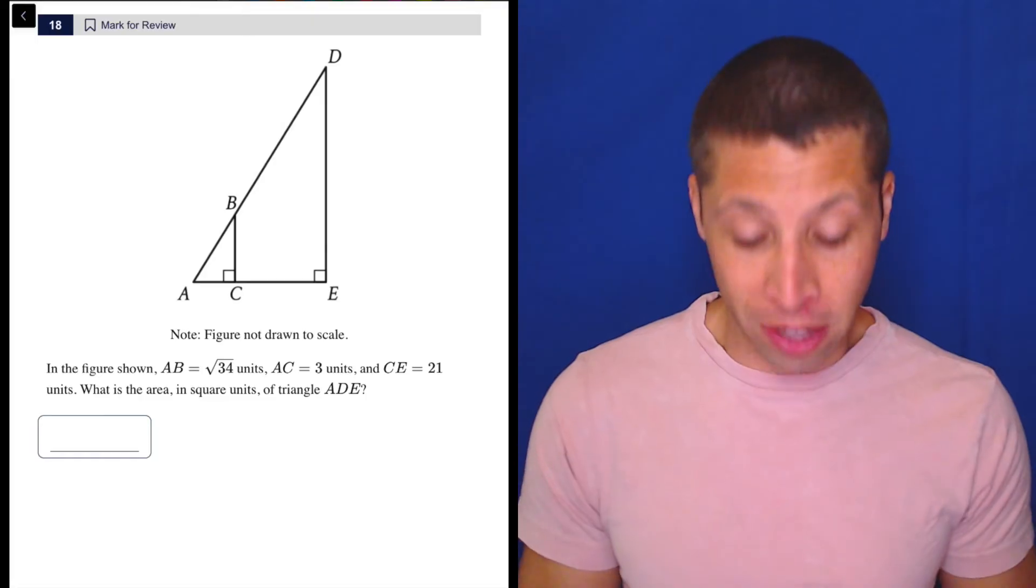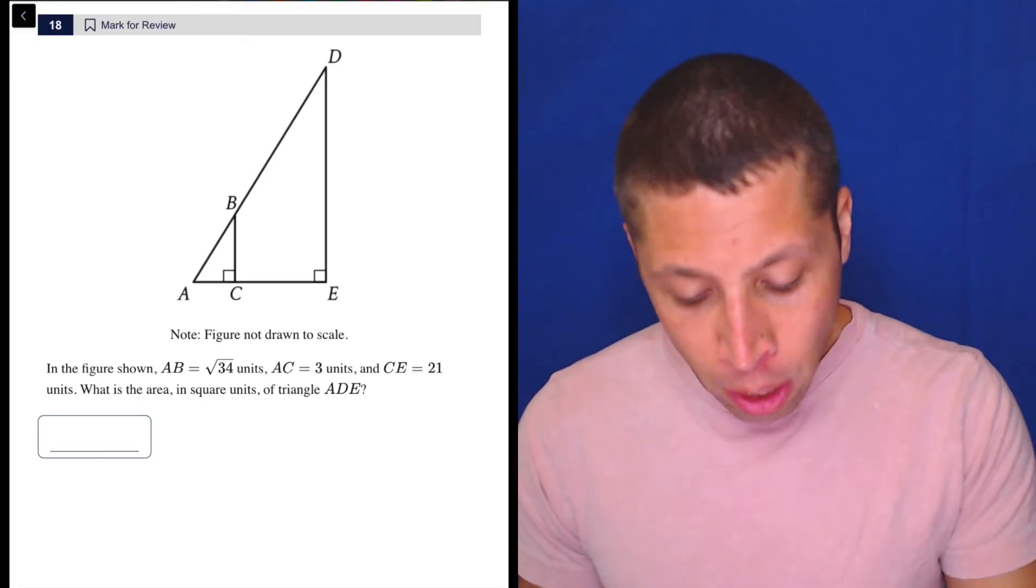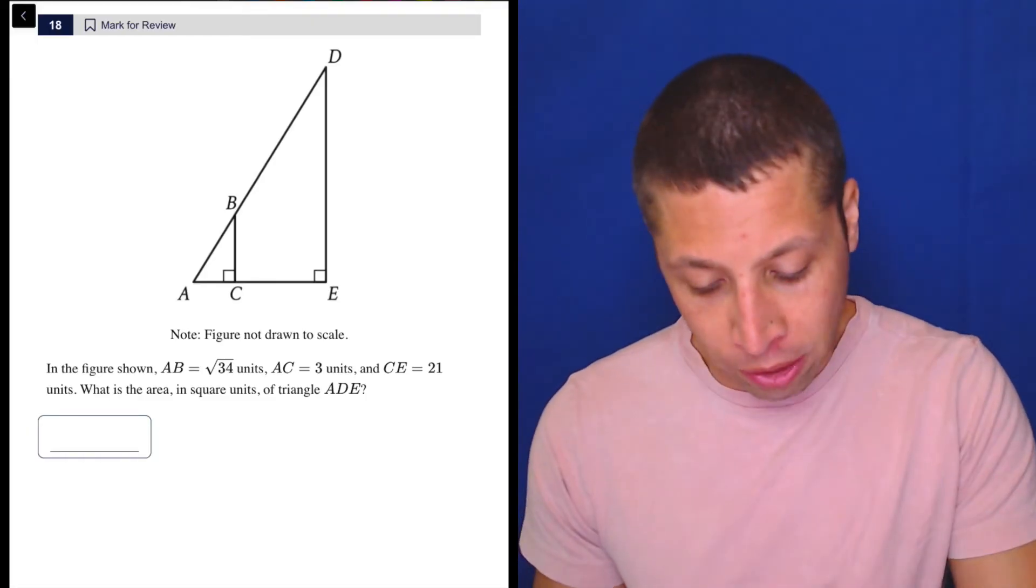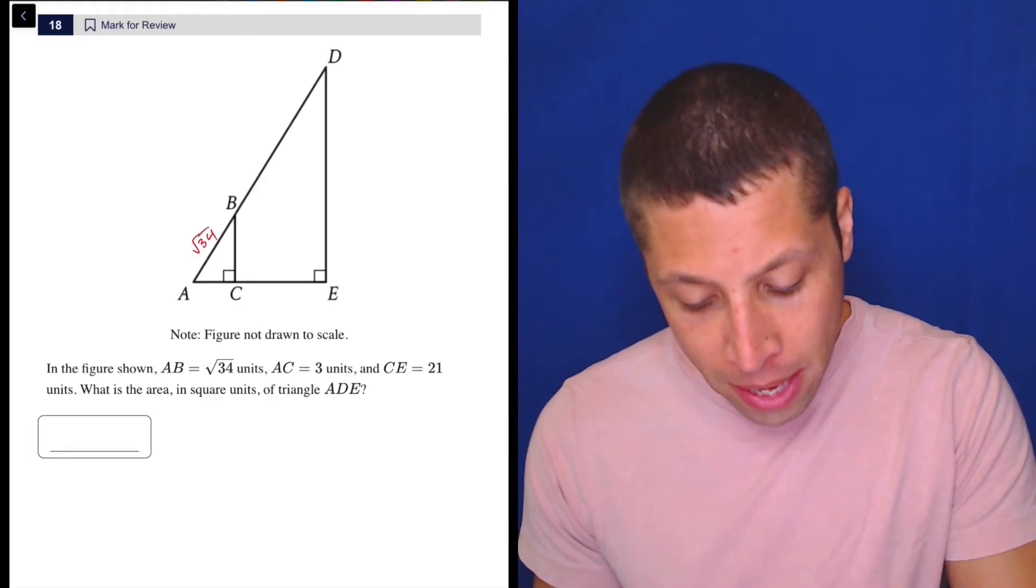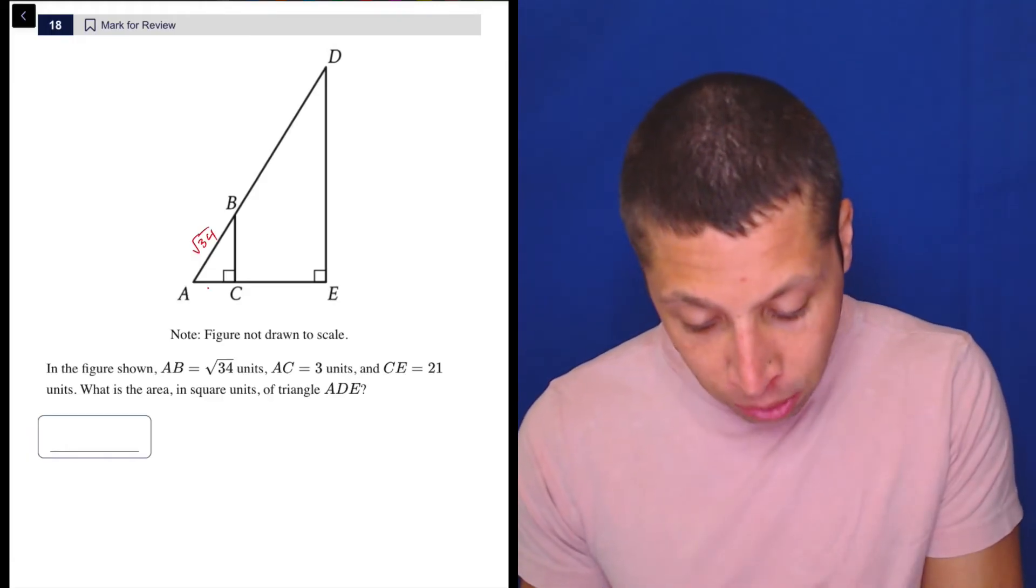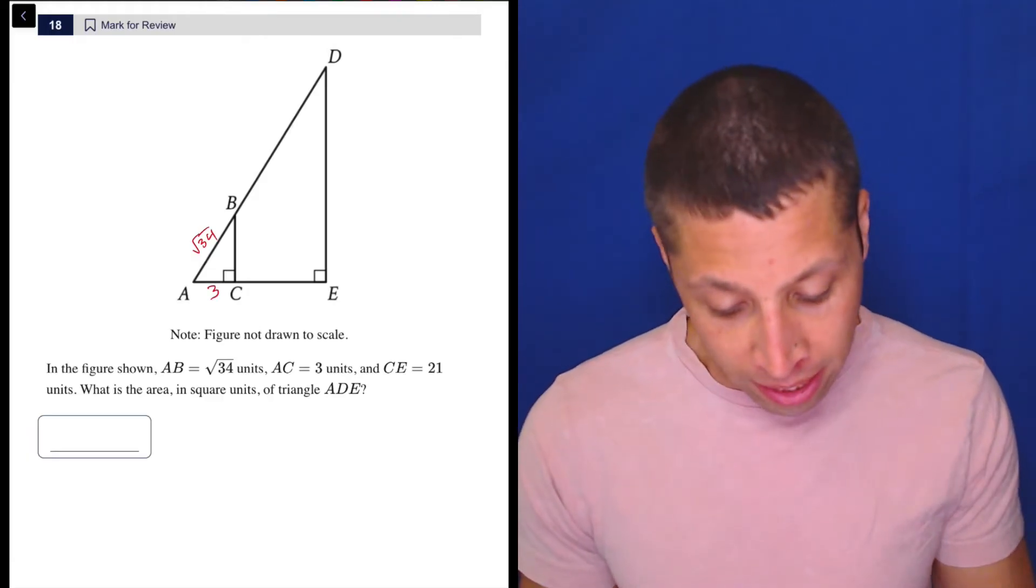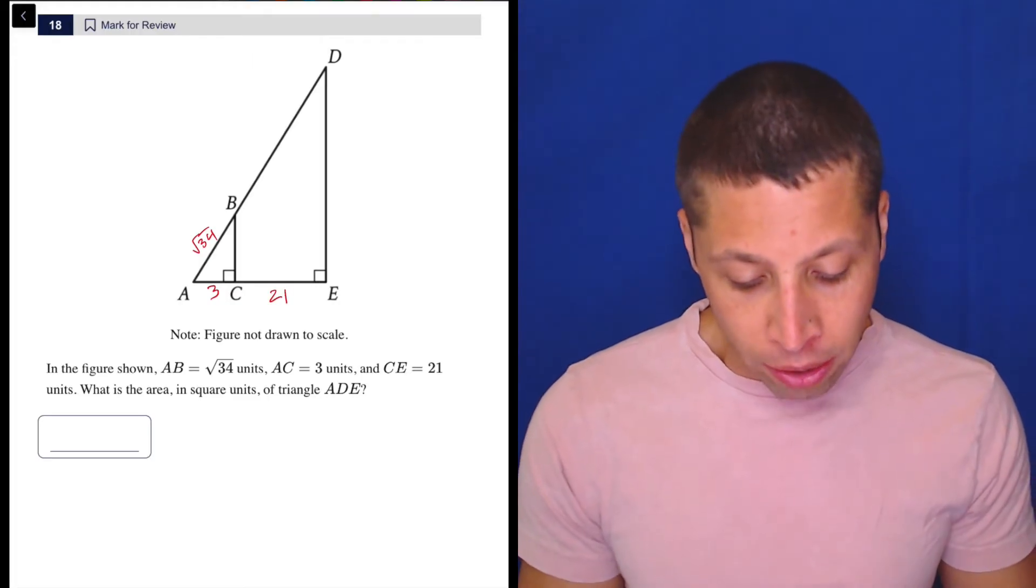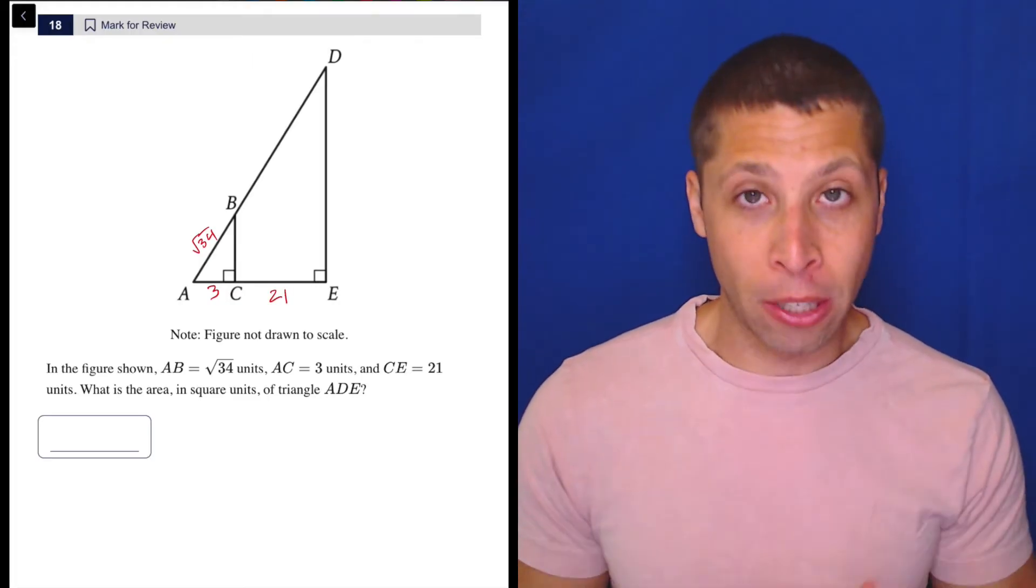So in this case, I'm just going to use the picture they gave me because I have my iPad, but we're going to put everything on the picture right away. So radical 34 is AB, AC is 3, so that's down here, and CE is 21. And they want the area of ADE, which is the big triangle.